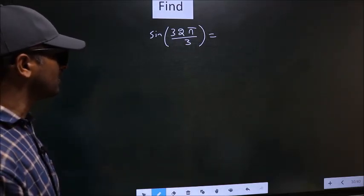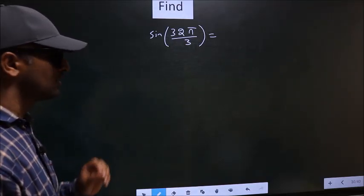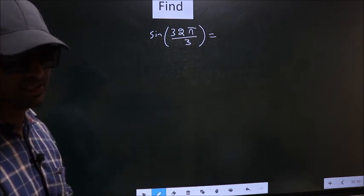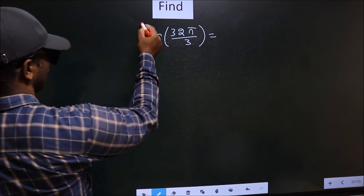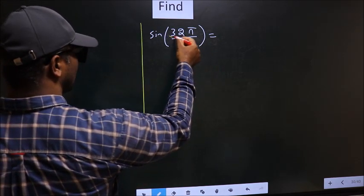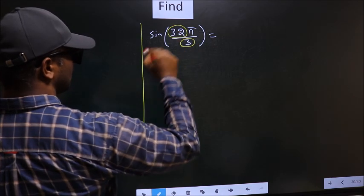Find sin 32π/3. To find this, we should follow this method C. Here we have 3 in the denominator and 32 in the numerator.